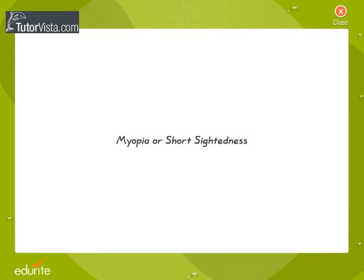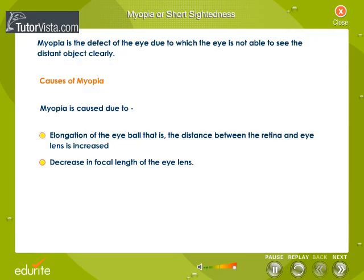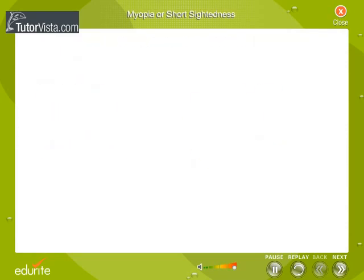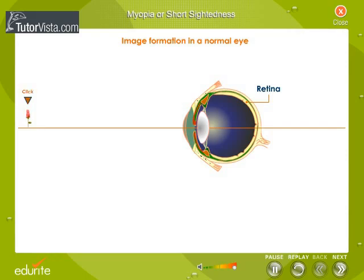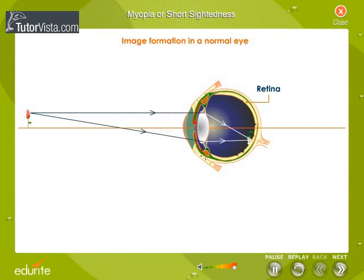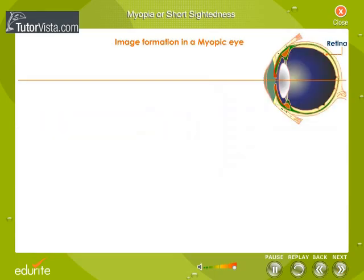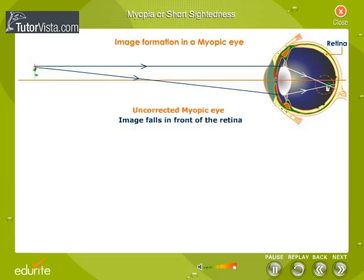Myopia, or short sightedness, is an eye defect. Here, the near vision is clear while distant vision is blurred. This occurs if the light rays entering the eye converge in front of the retina, in the vitreous body.